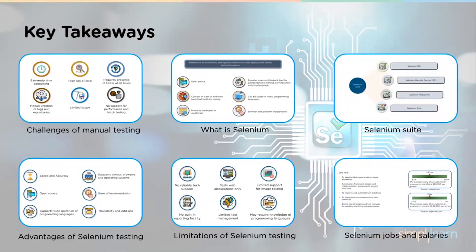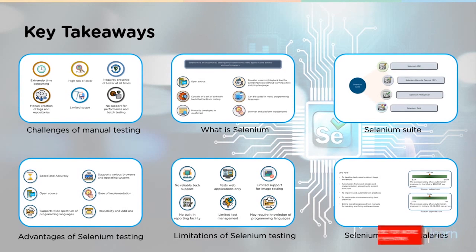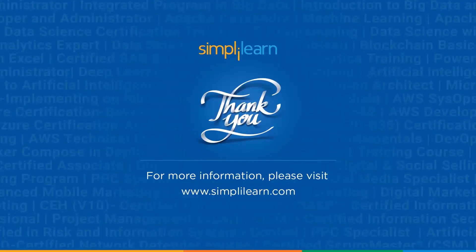So finally, let's look at the key takeaways. We understood the shortcomings of manual testing and why test automation was necessary. Then we understood what Selenium is and some of its key salient features. To answer why Selenium is so efficient, we learned about its robust suite of tools. Finally, we understood some of its advantages, and as every tool comes with its set of disadvantages, we learned about some of the limitations. And finally, we spoke about the scope of Selenium. With that, we've reached the end of the session. I hope you found this informative and helpful. Thank you for watching. Keep learning and stay tuned to Simply Learn.